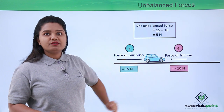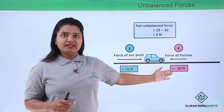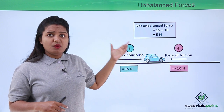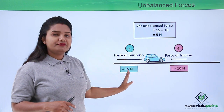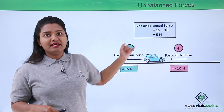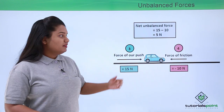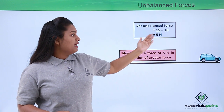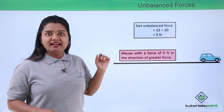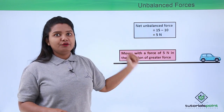The net force equals 15 minus 10, which is 5 N. The force of gravity and the force of reaction exactly cancel out each other, so only the push and friction contribute. Since the net force is not zero — it is 5 N — the toy car starts moving with a net force of 5 N in the direction of the greater force, which is the force of push at 15 N.